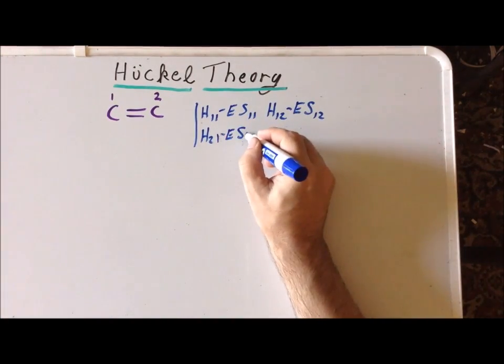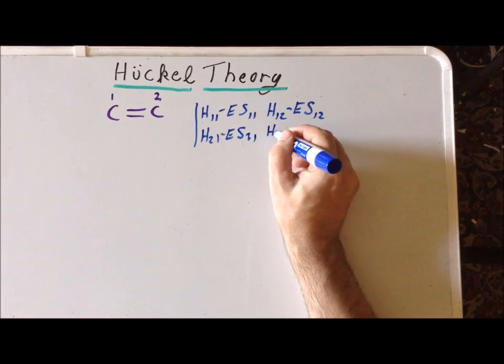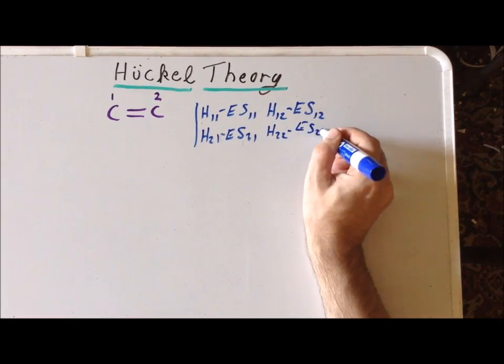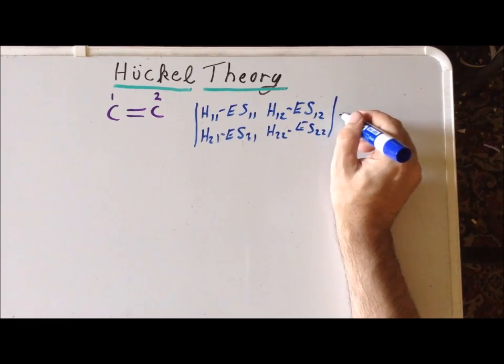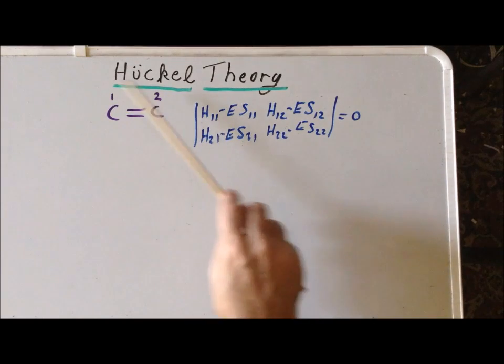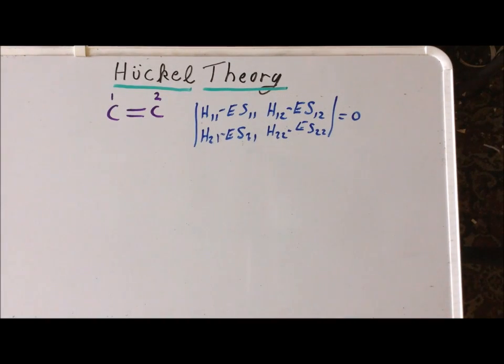We set this determinant equal to zero. In the case of ethylene, we realize that the sigma and pi orbitals are so different from each other in energy, and they are different by symmetry, that we can treat the sigma and pi systems separately.